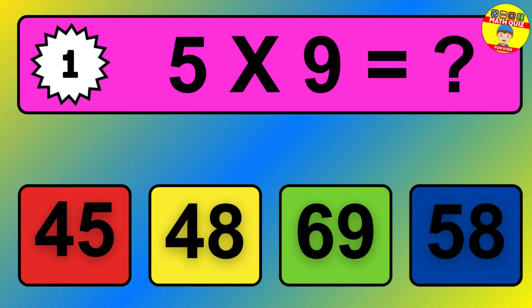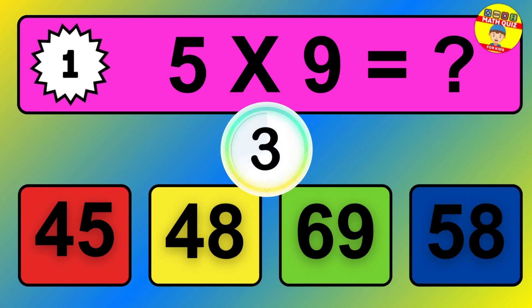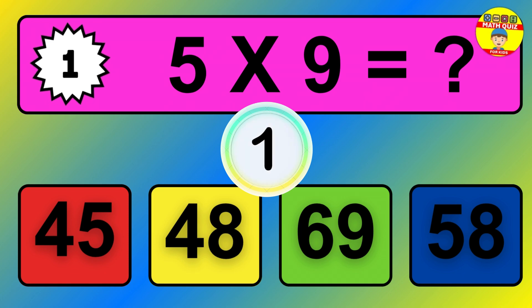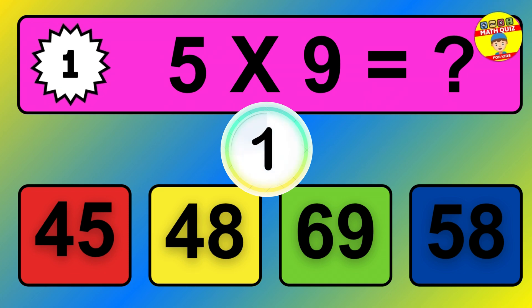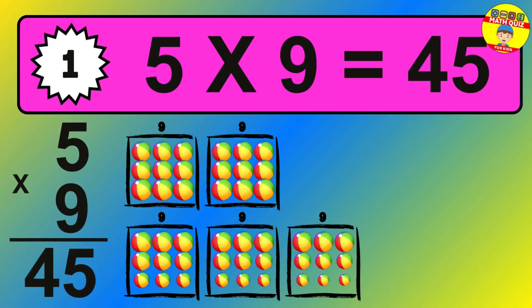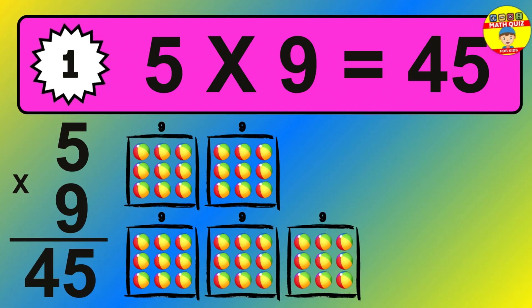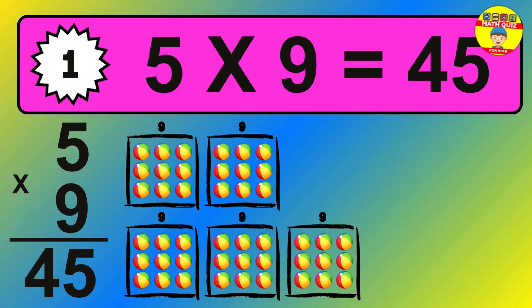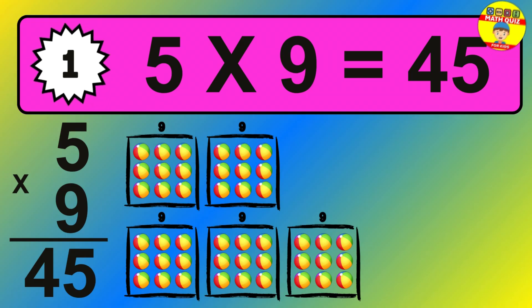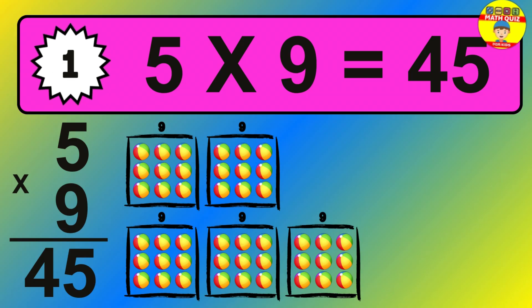Question 1. 5 times 9 equals what? The answer is 5 times 9 is 45. To calculate, we have 5 groups with 9 balls each one. So how many balls do we have? 45 balls.